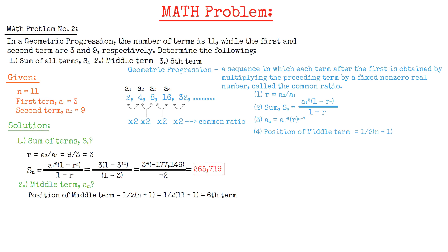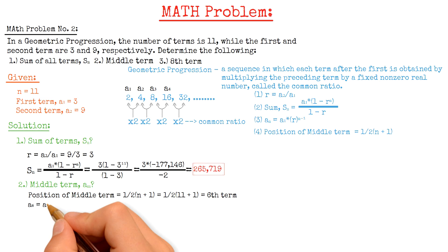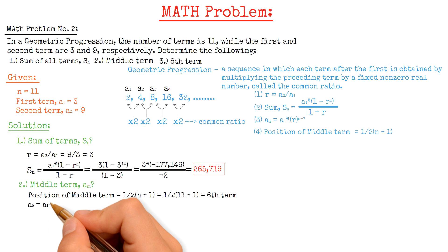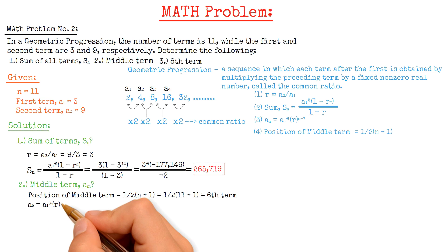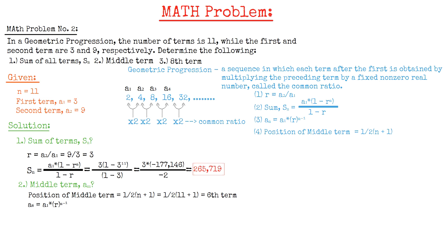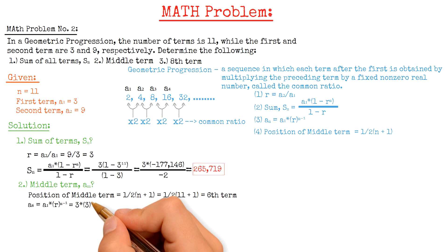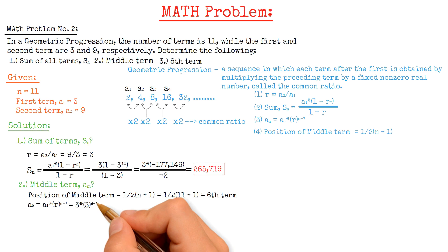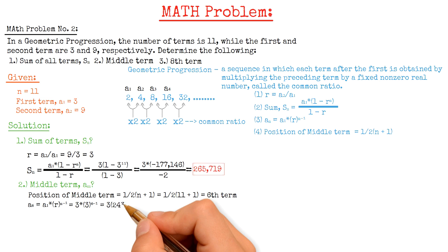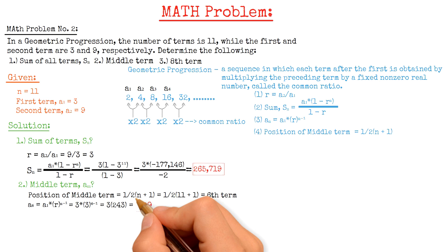To calculate for the 6th term, using the formula: A6 equals the first term A1 multiplied by the common ratio R raised to the power of N minus 1. We have 3 multiplied by 3 raised to the power of 6 minus 1, and then the result is 729.